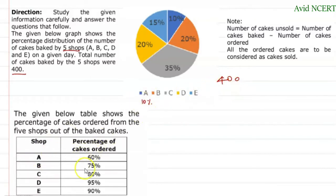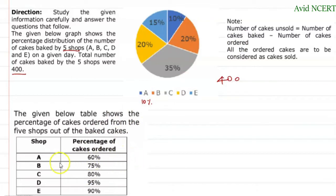Out of those cakes, 60% were ordered. Note: the number of cakes unsold equals the number of cakes baked minus the number of cakes ordered. Let's check for shop A alone. Out of 400 cakes, shop A made 10%.